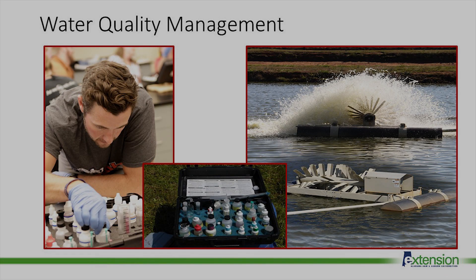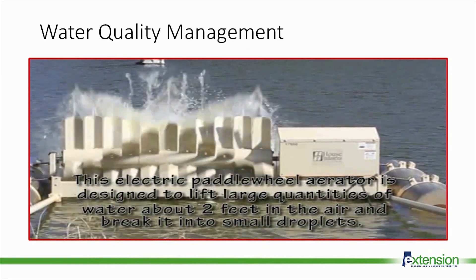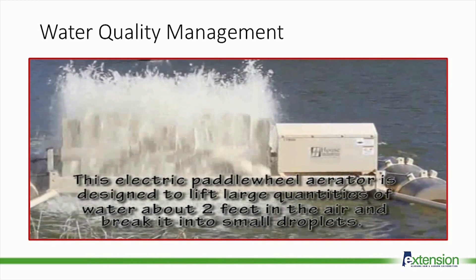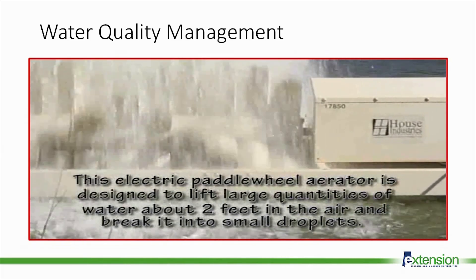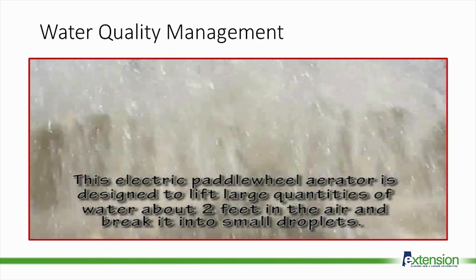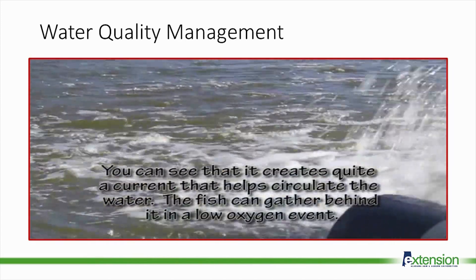Farmers have to closely monitor water quality to ensure optimum growing conditions. One of the most dynamic aspects of water quality is dissolved oxygen. Oxygen levels rise and fall during the day and tend to be their lowest just before sunrise. Sometimes mechanical aeration is used to increase dissolved oxygen levels. This electric paddle wheel aerator is designed to lift large quantities of water about two feet into the air and break it into small droplets, creating a large surface area that makes it easy for oxygen from the surrounding air to diffuse into the water, and creates quite a current that helps circulate the water and oxygen.